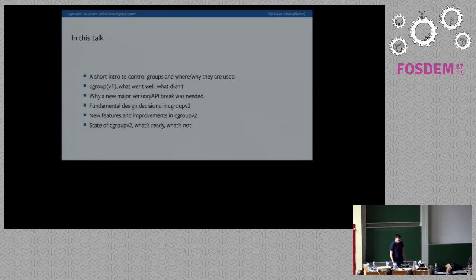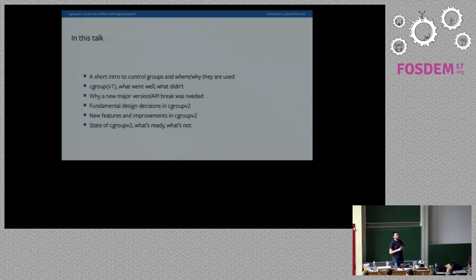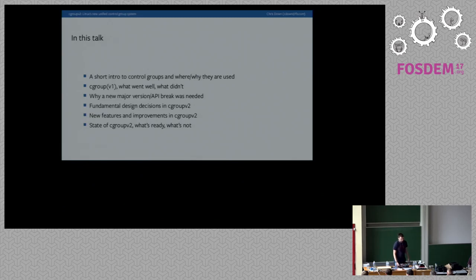In this talk I'm going to give an introduction to control groups — what they are, where you may have encountered them before. If you already know something about control groups, you've almost certainly been interacting with version one. Control groups have existed in the kernel since around 2008. It's been one of the building blocks of containers as we know them. It's got a whole bunch of good things, but also usability issues, which is why I want to go into what those are and how we improve that in cgroupv2.